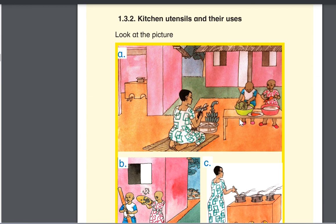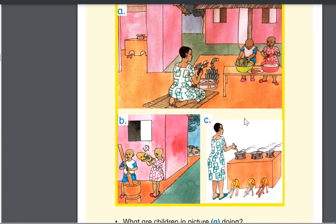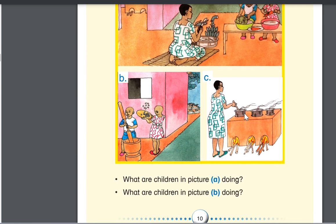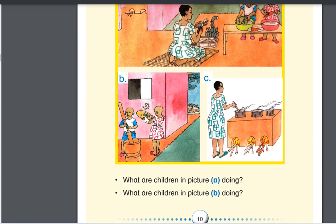When you go down, you can see here we have the girl who is winnowing using a winnow. You can also see that you have the mother who is cooking using the saucepan.